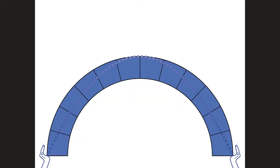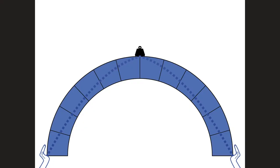If we add a weight to the middle, that thrust line slightly changes — just the same way a cable hung under its own weight would slightly change if we added a weight at the middle. The thrust line is still all within the arch, so all is good.